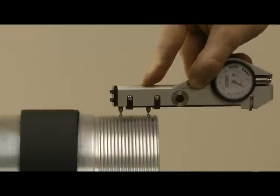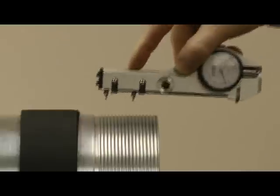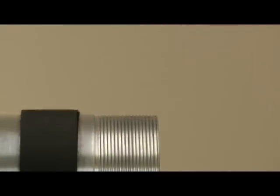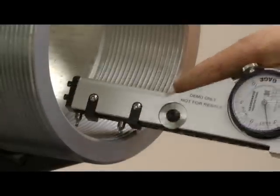After setting the lead gauge on the appropriate setting standard, proceed to take measurements at specific locations on the thread where error typically occurs. These multiple readings detect machine tool error and worn lead screws on your lathe.